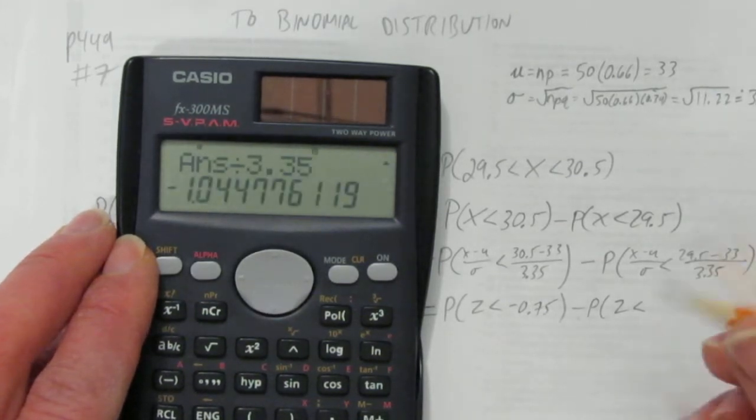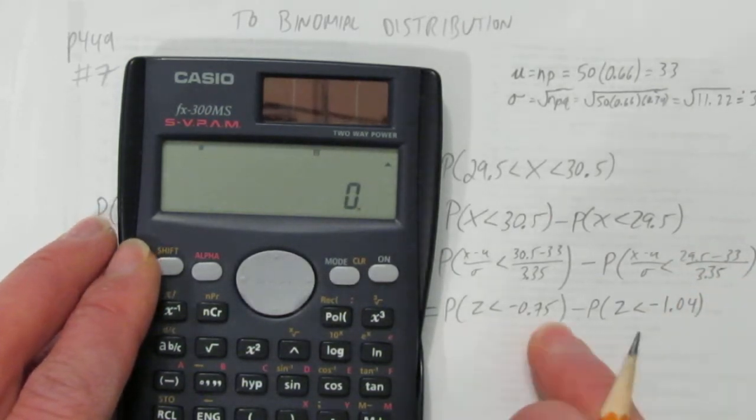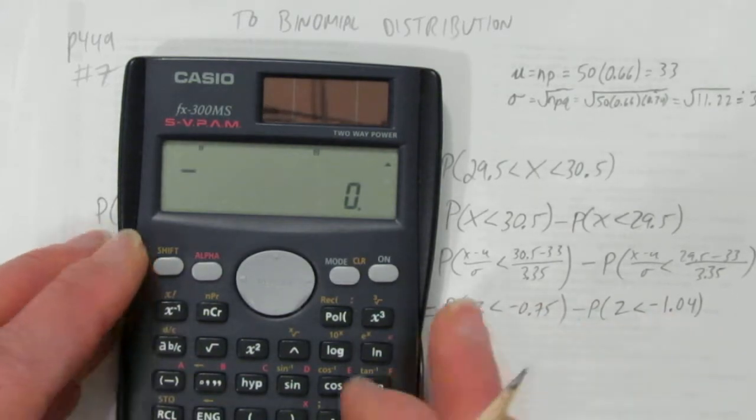So that's negative 0.75. And then the second one is minus the probability of a z-score being less than 29.5. Take away 33. Don't forget to hit equals. But you can then divide. The calculator knows to divide at the end. And we need two decimals. So negative 1.04.